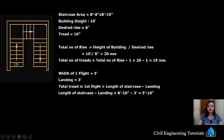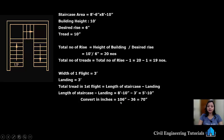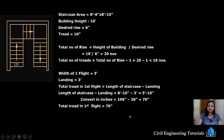The staircase area is 8 feet 6 inches by 8 feet 10 inches, so this side is 8 feet 10 inches. So 8 feet 10 inches minus 3 feet landing gives 5 feet 10 inches. If you want to convert to inches: 8 feet 10 inches equals 106 inches, and 3 feet equals 36 inches. So 106 inches minus 36 inches gives 70 inches. So, total tread length in one flight is 70 inches or 5 feet 10 inches.